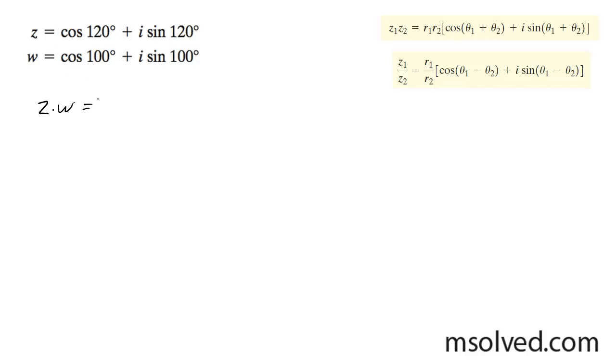There's no coefficient in front of these. The r value is 1, so I can just write it out here. We've got the cosine of 120 plus 100 plus i sine of 120 plus 100.